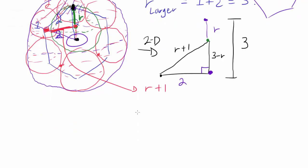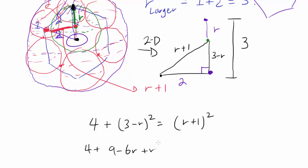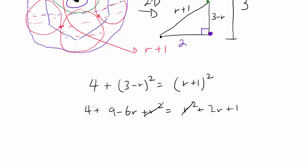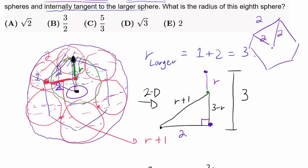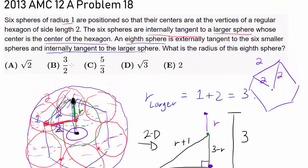Applying the Pythagorean theorem: 2 squared plus (3 minus R) squared equals (R plus 1) squared. Expanding: 4 plus 9 minus 6R plus R squared equals R squared plus 2R plus 1. The R squared terms cancel, giving 13 minus 6R equals 2R plus 1. Rearranging: 8R equals 12, so R equals 12 over 8, or 3 halves. That's the answer: R equals 3/2.